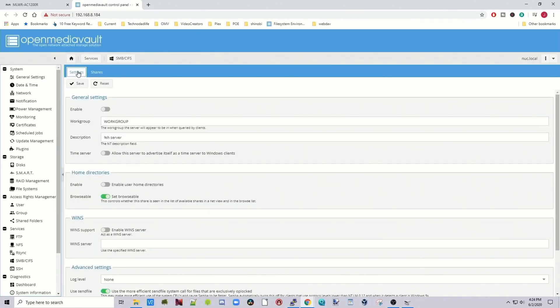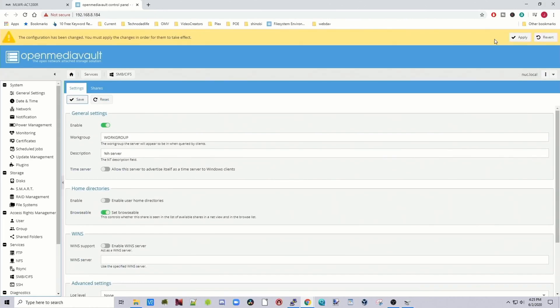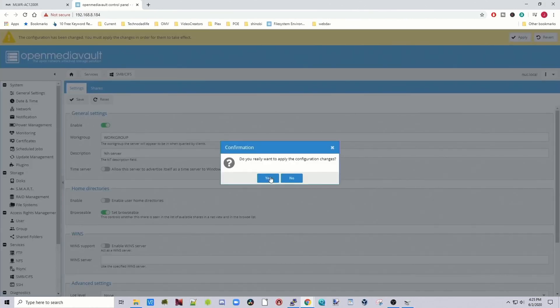Because this is a new installation of OMV again, we need to re-enable Samba. So click on Settings and then Enable. Then click Save, Apply, and Yes.